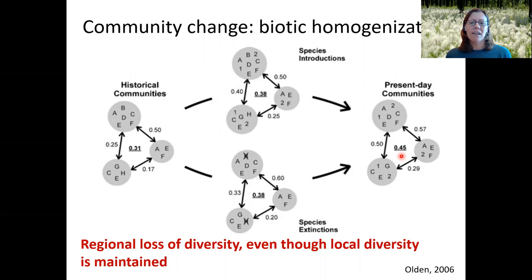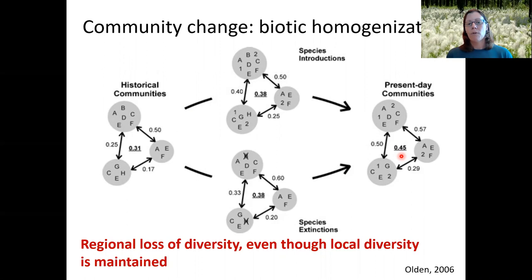Why is biotic homogenization a concern? If everything is really similar to each other, then all of those different ecosystems become vulnerable to the same things — the same types of climate change, the same types of new pests or pathogens. This could lead to catastrophic loss of ecosystem characteristics across large areas simultaneously.